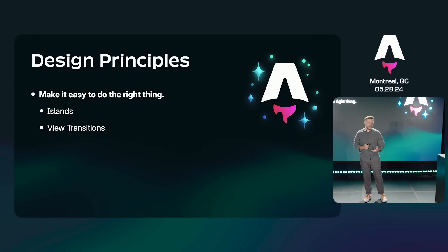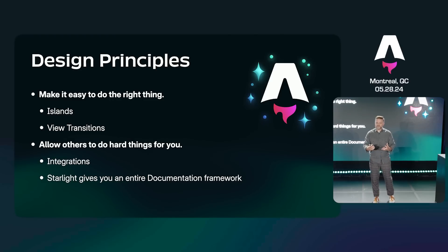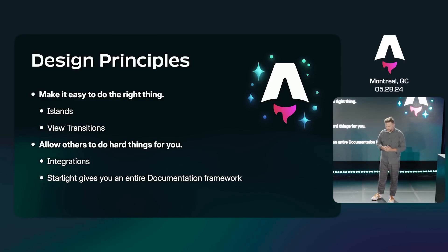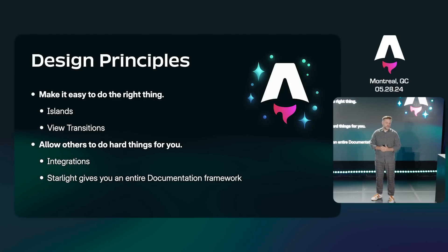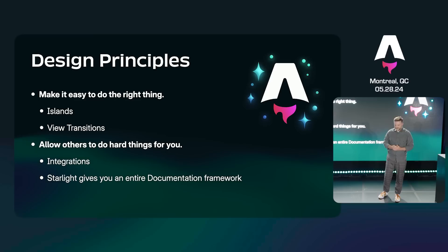Another thing we often think about is making it so that others can do the difficult thing for you. This really comes through with our integrations API. With integrations, you have hooks into the entire process that Astro runs. Starlight is a great example — it gives you an entire documentation framework as an integration. We think that's really powerful. Think about these principles as I go through each of these features.